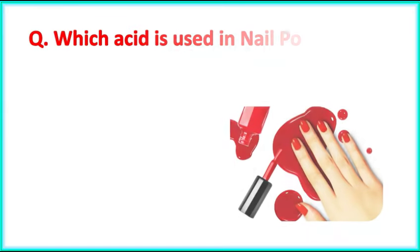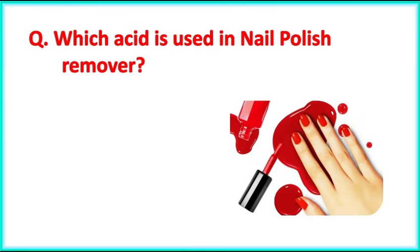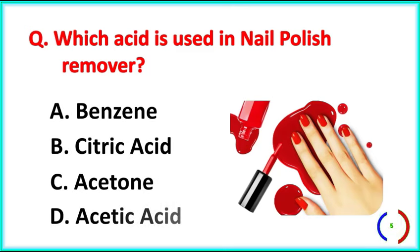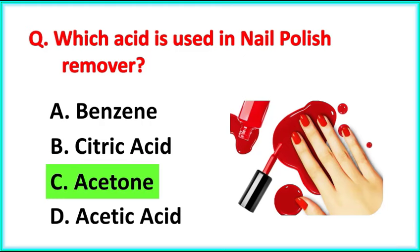First question. Which acid is used in nail polish remover? The correct answer is Option C. Acetone.